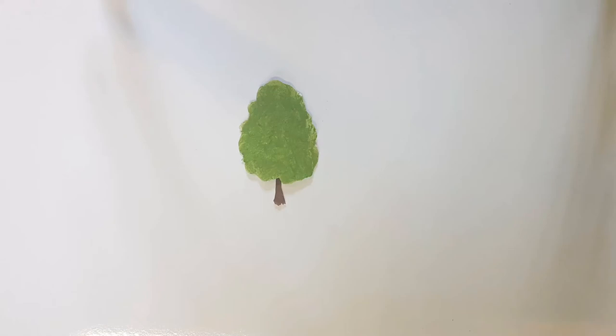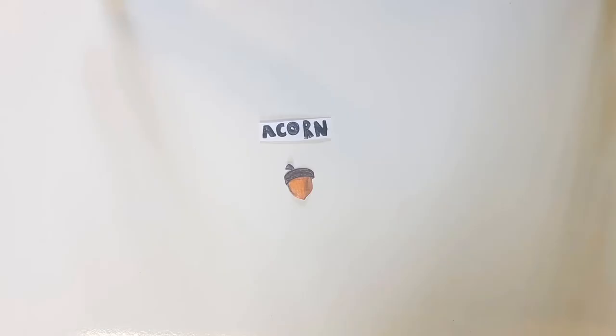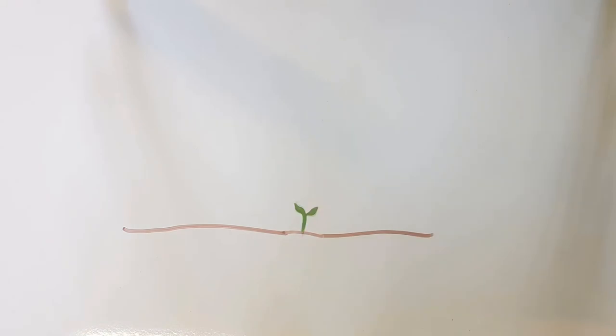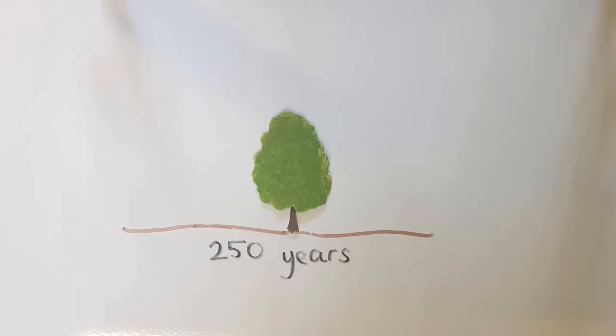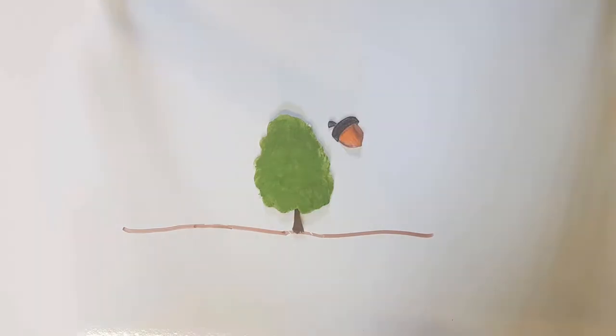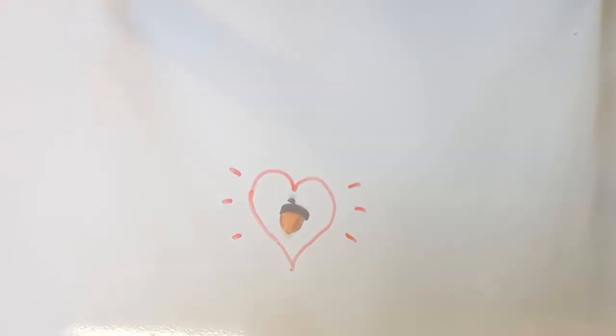Oak trees are a very common tree here in the UK. They grow from acorns, and many oak trees live to be around 250 years old, but they can live up to 500 years old. Lots of animals like to eat these acorns, such as squirrels, mice, and jays.